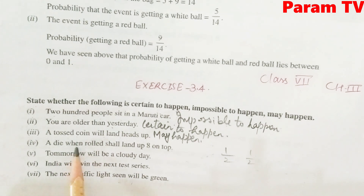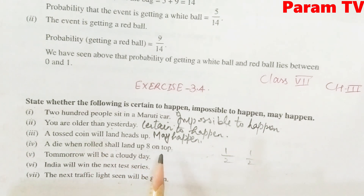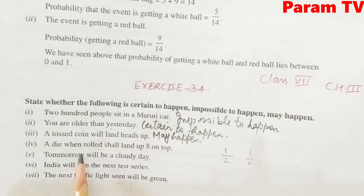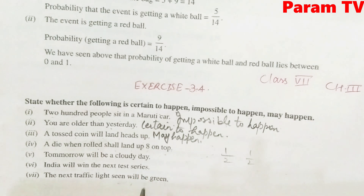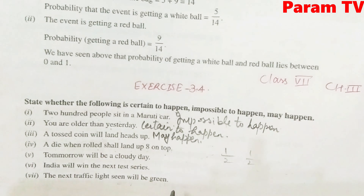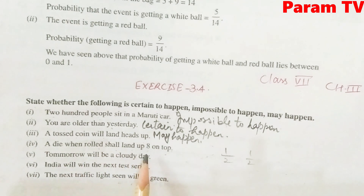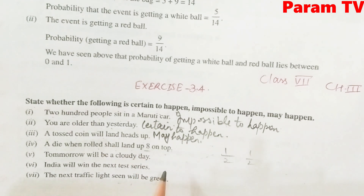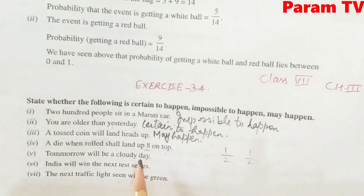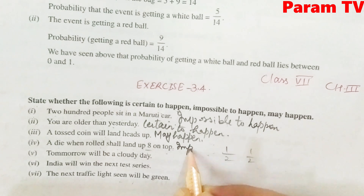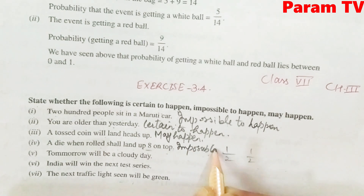Next: 'A die once rolled will land up 8 on the top.' A standard die has numbers 1 to 6. Getting 8 is not possible since 8 does not exist on a die. So this is impossible to happen.